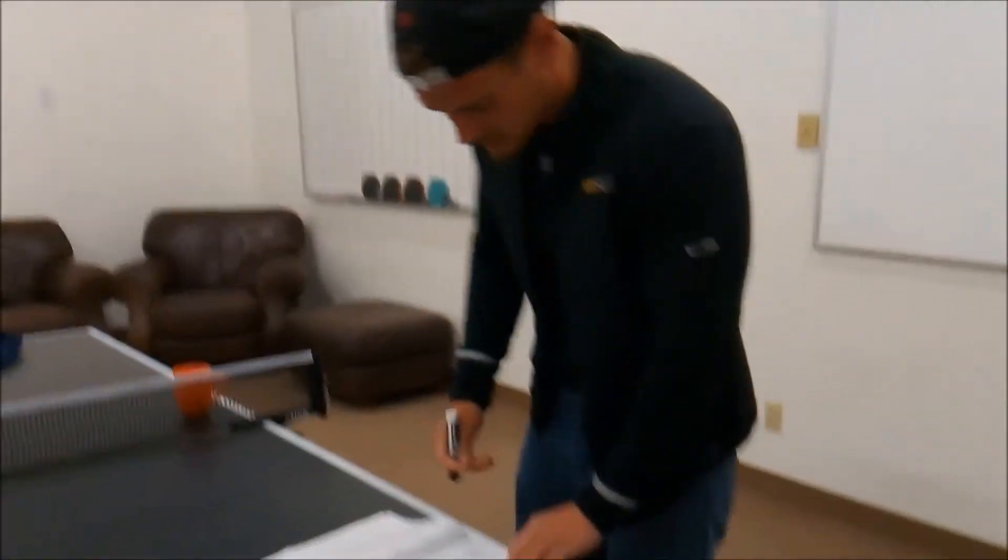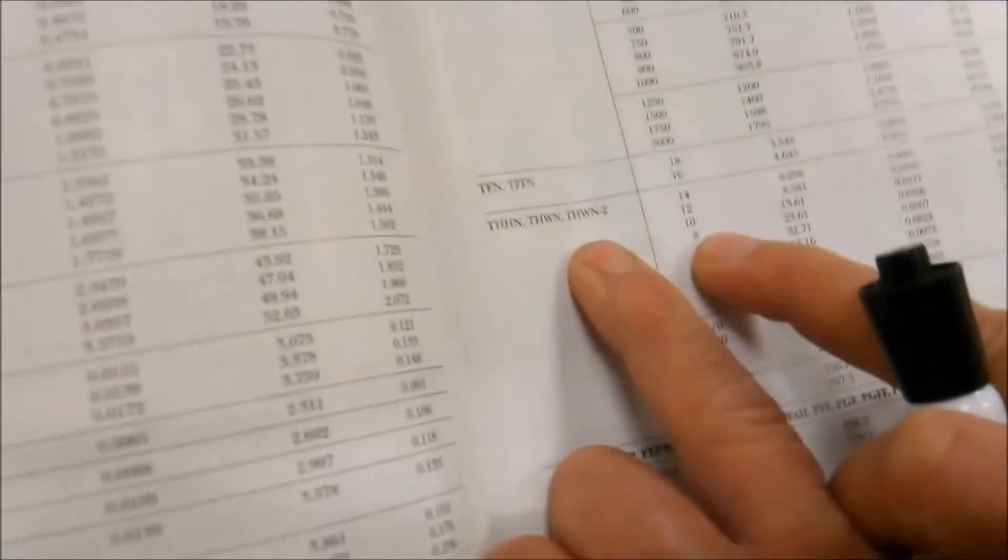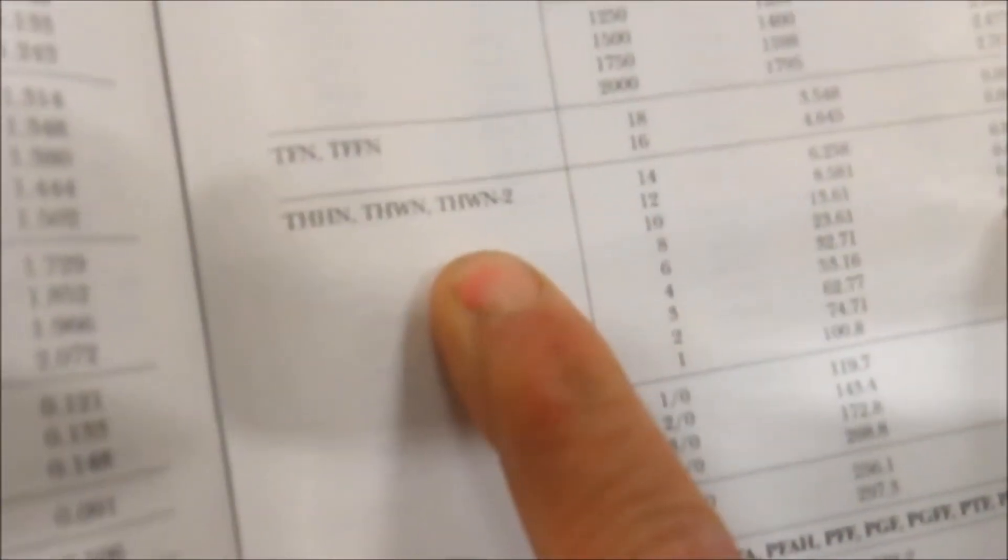And we're going to use metal rigid conduit. So here we go to the chapter 9 tables, and THWN2 is in table 5. Go down here to 8 gauge, and what we want is the area of it, not the diameter, because we want to know the fill.